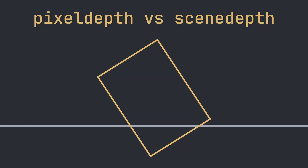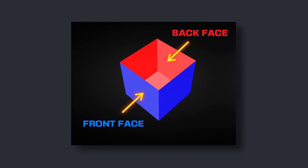We solve this in two steps. First, with depth testing: we compare each pixel's depth against the scene's depth and process only those pixels with a greater depth, ensuring they fall within the decal's bounds. The second is raster culling — to make sure only the correct side of the box is rendered, we enable front-face culling.